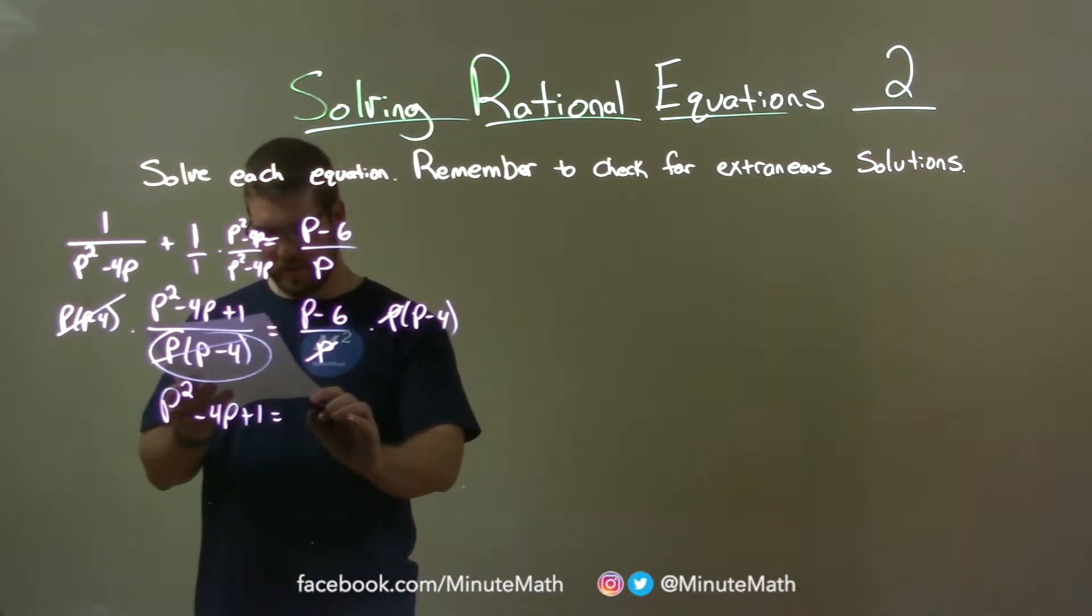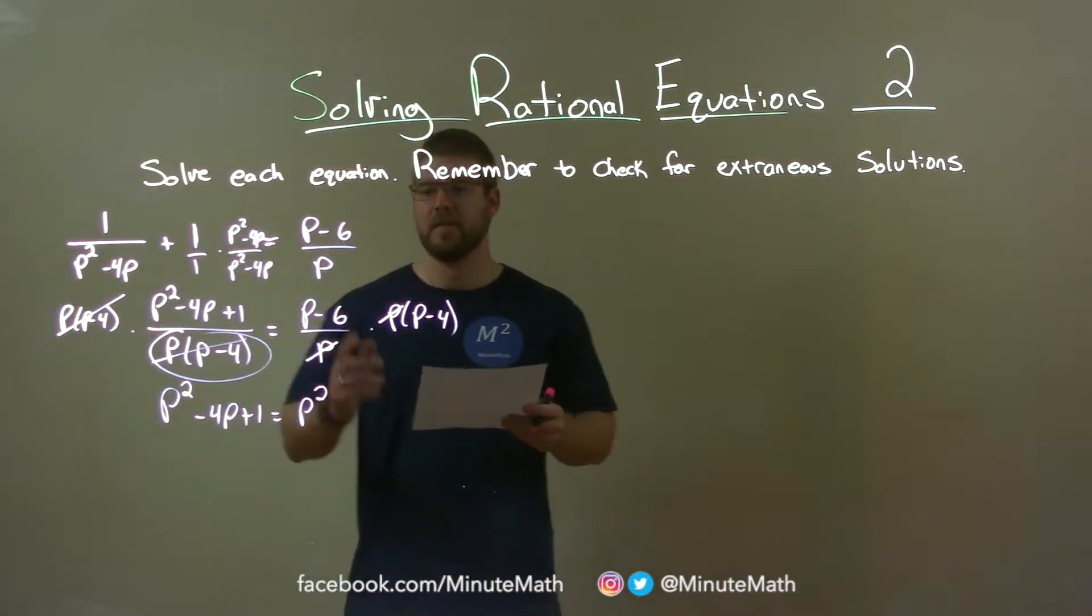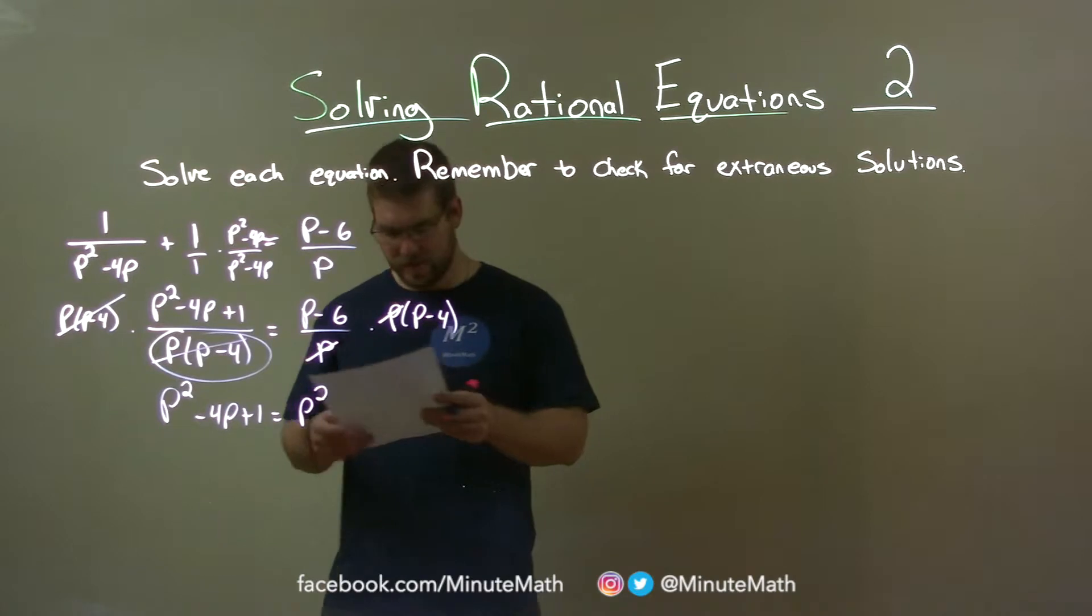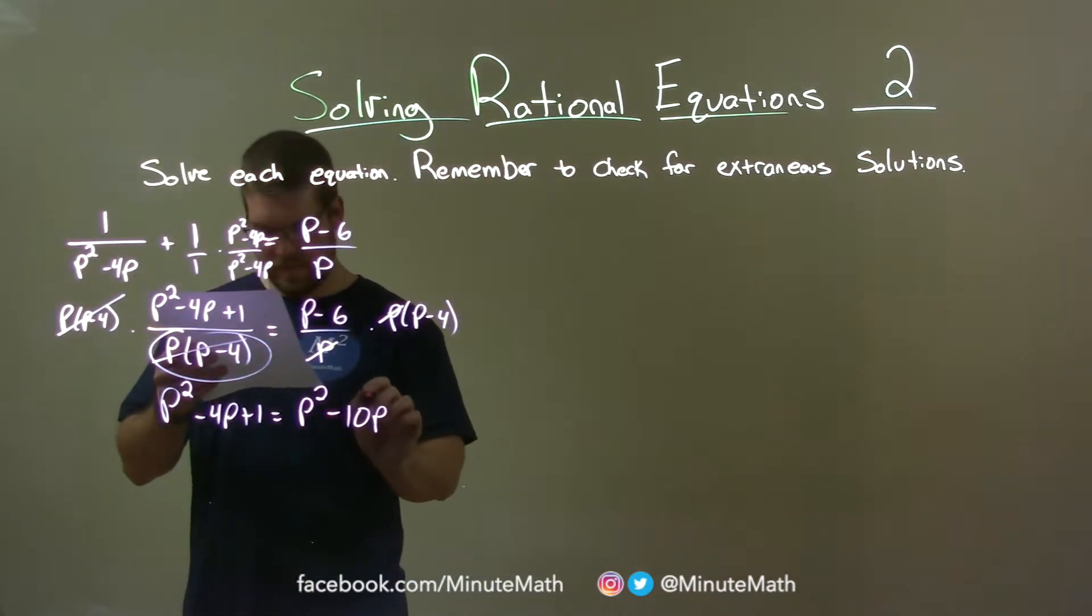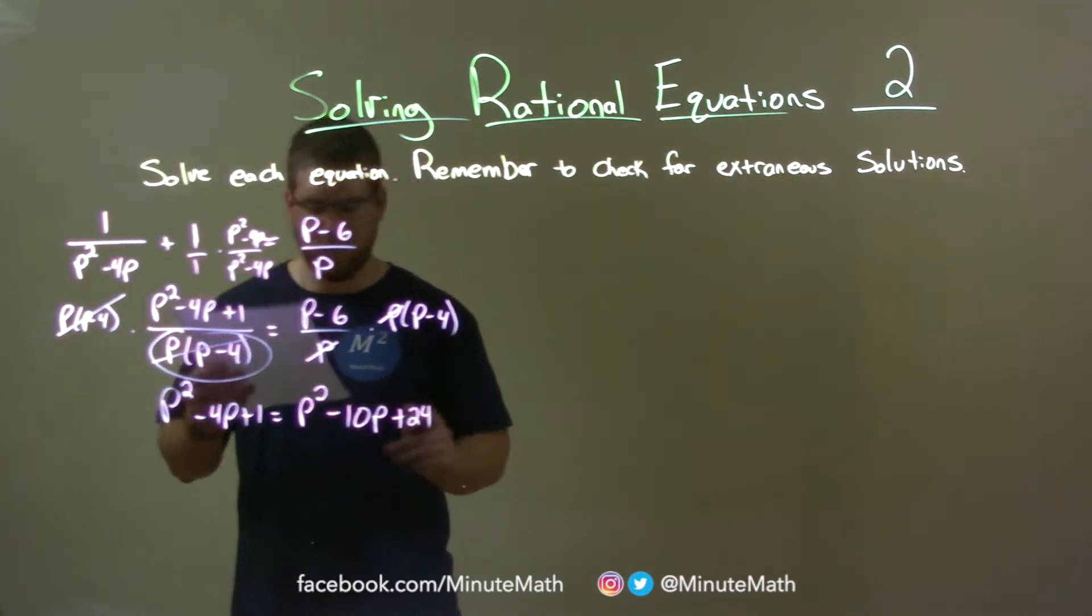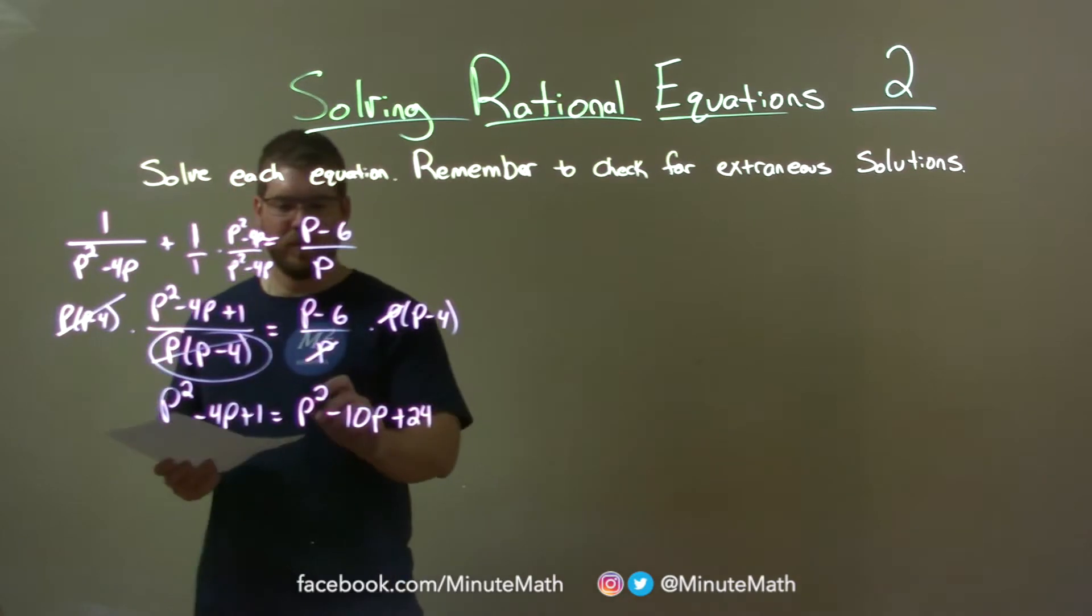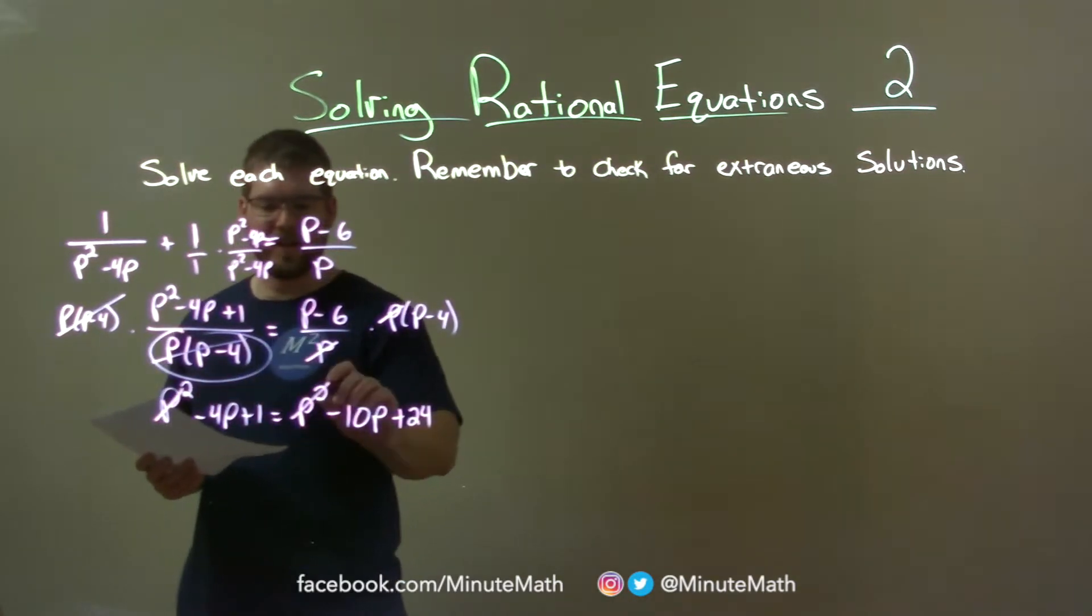Now I have p minus 6 times p minus 4. p times p is p squared. p times minus 4 is minus 4p. Minus 6 times p is minus 6p. Together they make it minus 10p. And negative 6 times negative 4 is a positive 24. So now while we have a p squared on both sides, they end up canceling.